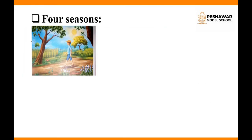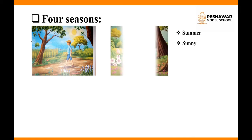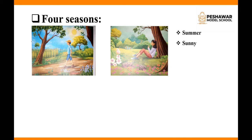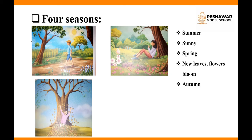There are four seasons in our country and we enjoy them. The first is summer, which brings hot and sunny days. The second is spring, where a girl is sitting under a tree — there are flowers and new leaves appearing on the trees. The third is autumn, when the trees start to shed their leaves.